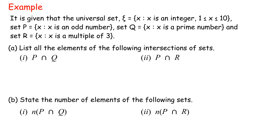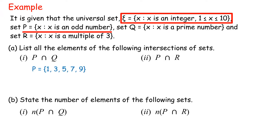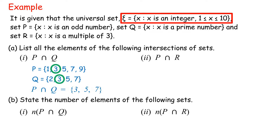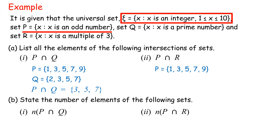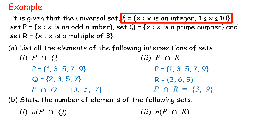Solution. Part A. 1. P intersect Q: P = {1, 3, 5, 7, 9}, Q = {2, 3, 5, 7}. Therefore P intersect Q = {3, 5, 7}. 2. P intersect R: P = {1, 3, 5, 7, 9}, R = {3, 6, 9}. Therefore P intersect R = {3, 9}.